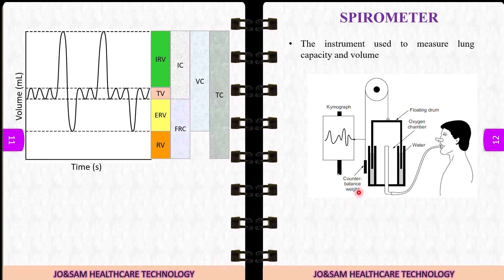This is the basic spirometer setup. A potentiometer is attached to the counterbalance weight, along with an electrical output, allowing many advancements. On the kymograph, as we inspire or expire, there are variations in the curve.